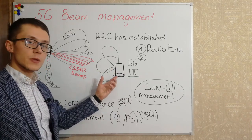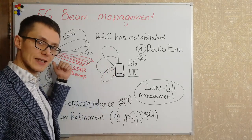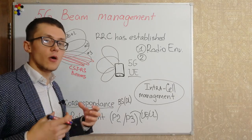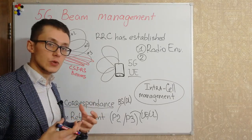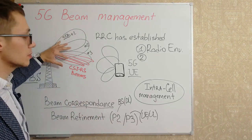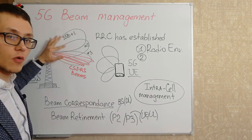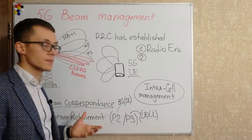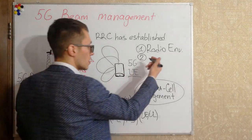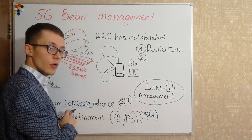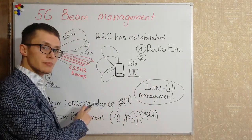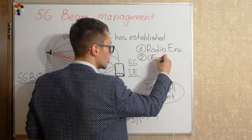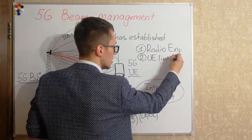User equipment, while performing initial access to the network, may not have the full opportunity to explore all possible SSB beams with all possible CSI-RS narrow beams. This is why there can be no beam correspondence — user equipment limitations.